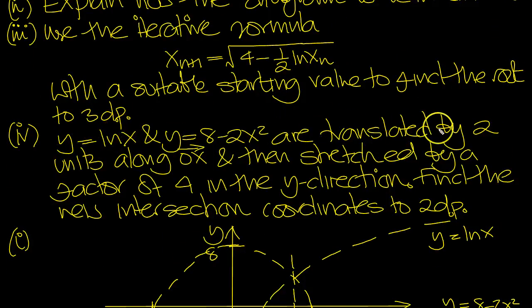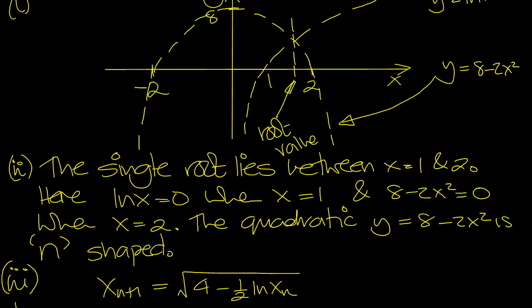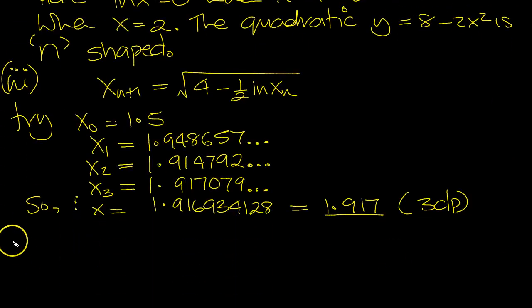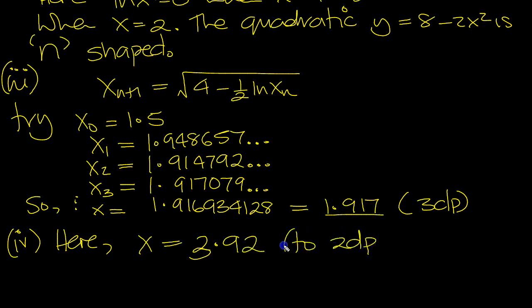Part 4: these two curves are translated by two units in the positive x direction, then stretched by a factor of 4 in the y direction. Find the new intersection coordinates to 2 decimal places. The curves are shifted over by two units, so for the x value, just add 2 to this. To 2 decimal places, that's 3.92. We shifted it forward by two units and rounded to 2dp.